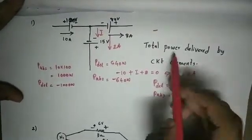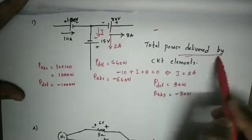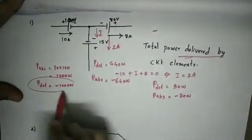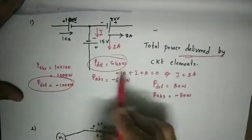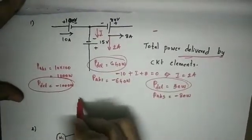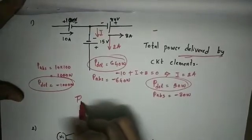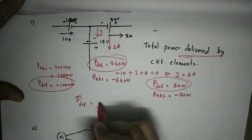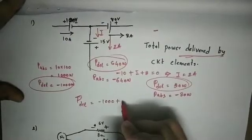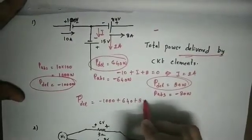So the total power delivered by the circuit elements is equal to minus 1000 W plus 640 W plus 30 W.